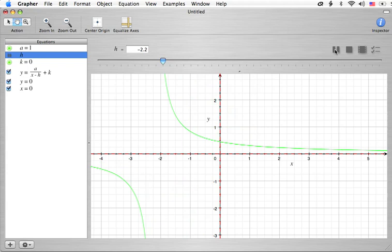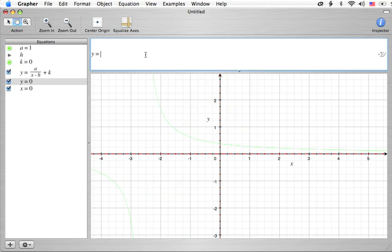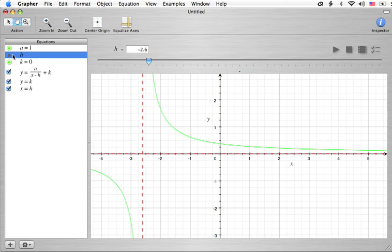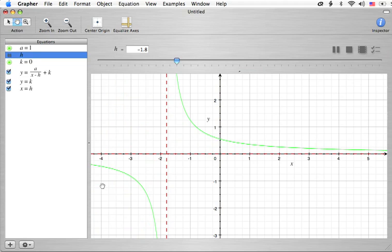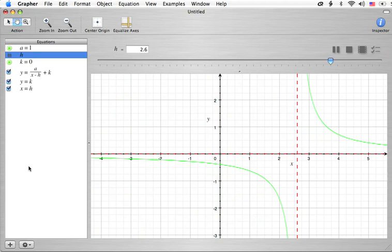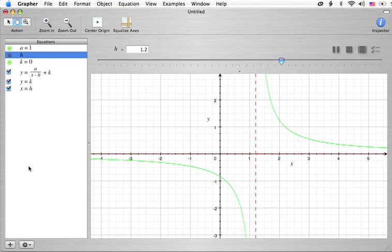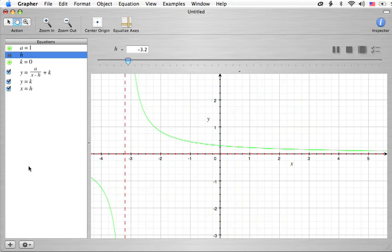Oh, sorry. I did forget something. I forgot to mess with these because what happens is the y goes with the k and the h, sorry, the x goes with the h. So now, as I play this, you'll see the vertical asymptote. That's what we call this. The vertical asymptote will actually move with the entire graph.